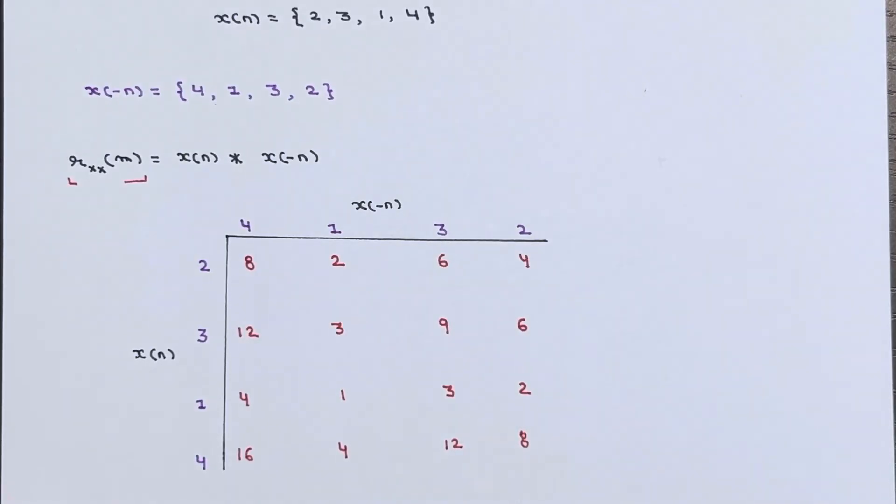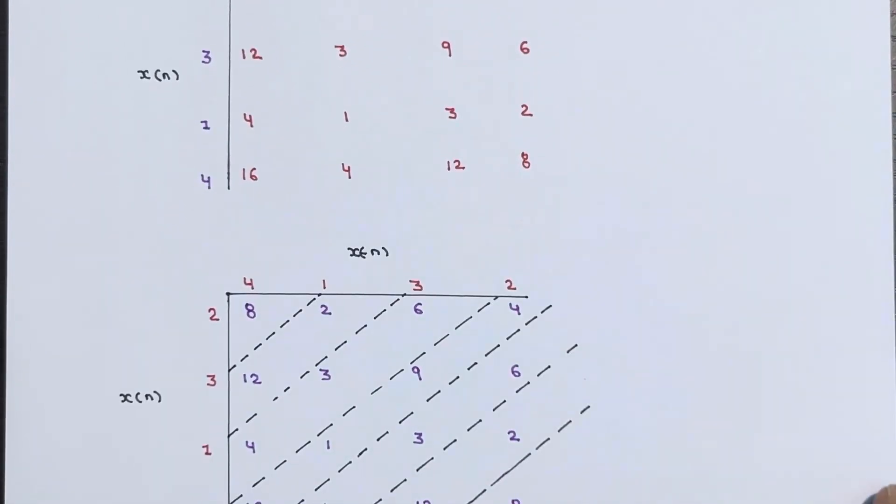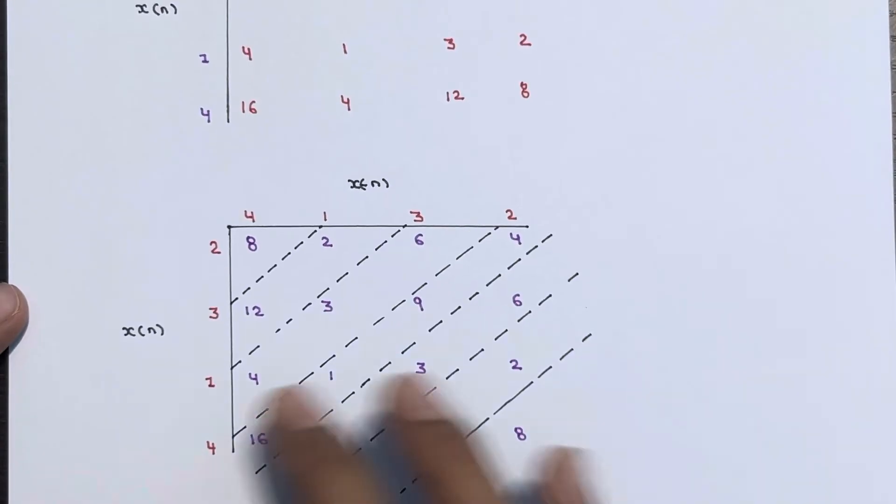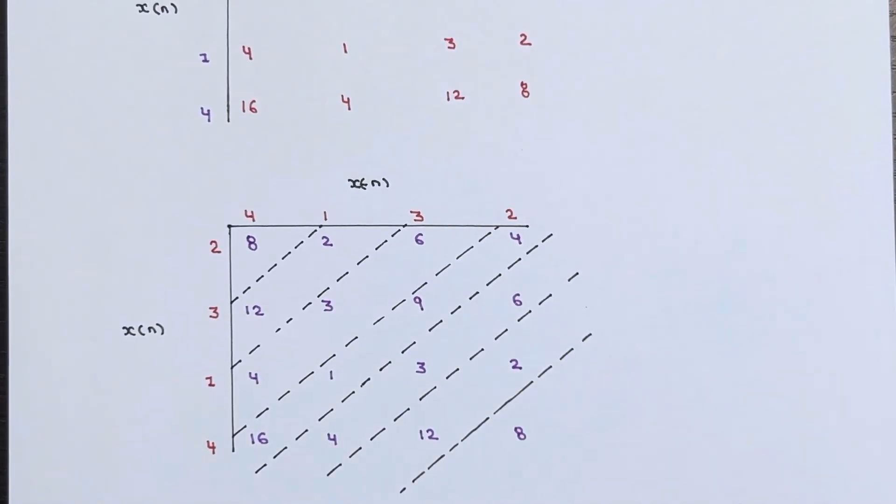So we have filled up the matrix array. Now the third step is to group the elements in the table by drawing diagonal lines. I have drawn the diagonal lines and grouped the elements. In the last step, calculate the sum of the diagonal elements in the matrix which will give the samples of the output sequence. You have to sum up the diagonal elements.